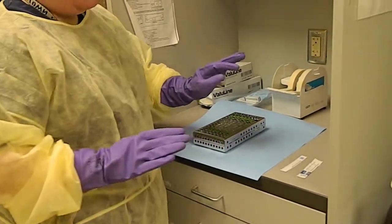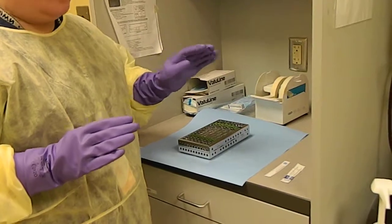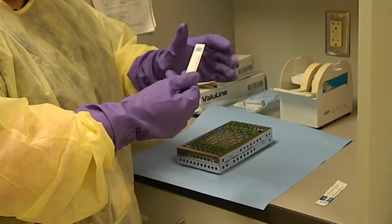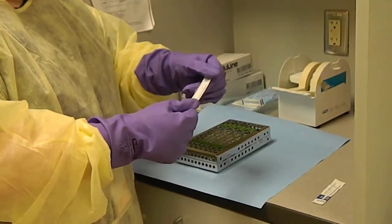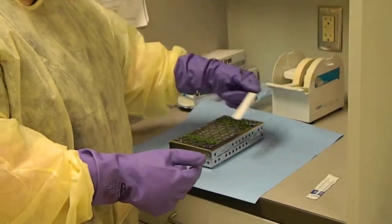Now there's a couple different indicator strips that we use for sterilization, for heat sterilization. One is the indicator strip which is a paper strip and we're going to put that inside of the cassette. And before we do we're going to put our initials and the date and slide that in.